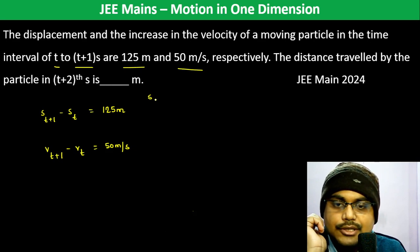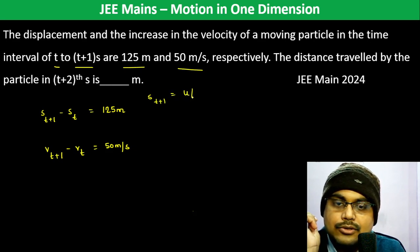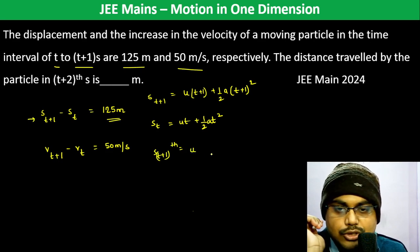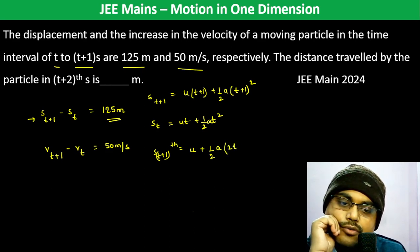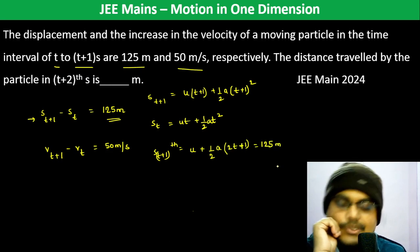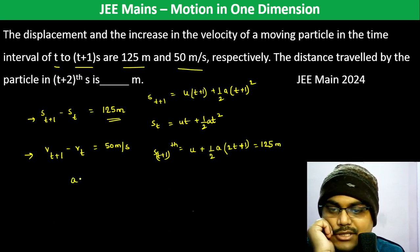Let's write S_{t+1} = u(t+1) + 1/2 a(t+1)² and S_t = ut + 1/2 at². So the displacement in the (t+1)th second, which is 125 meters, will be u + 1/2 a into (t+1)... this becomes 2t+1. And the velocity increase given is V_{t+1} - V_t, so acceleration becomes 50 m/s².